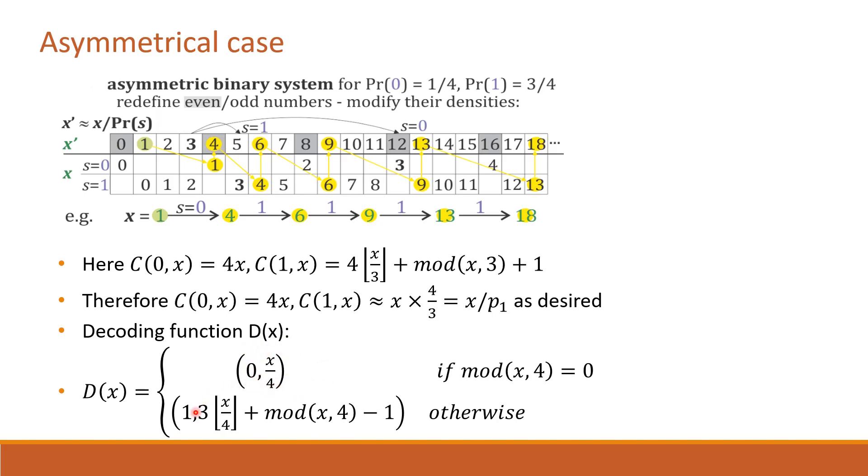Decoding s equal to 1, instead of grouping into quadruplets, group these numbers into triplets: 0, 1, 2, 3, 4, 5, 6, 7, 8 and so on. Using similar logic, the term 3 times floor(x/4) uses the triplet and the remaining term uses the distance of the exact location. So the final decoding function D(x) is 3 times floor(x/4) plus mod(x,4) minus 1.